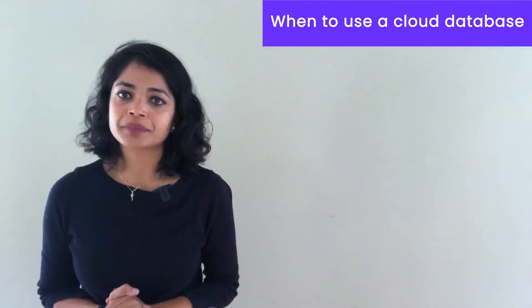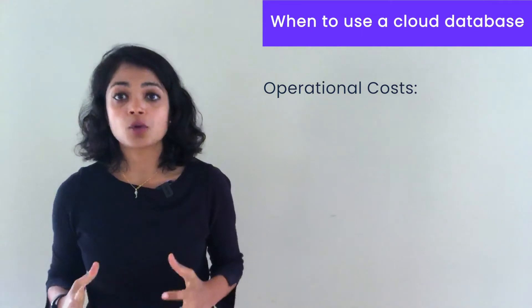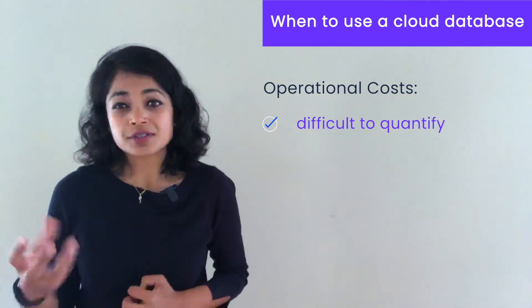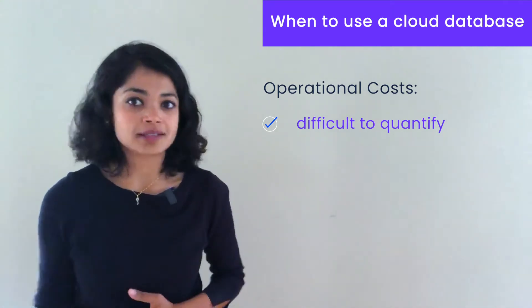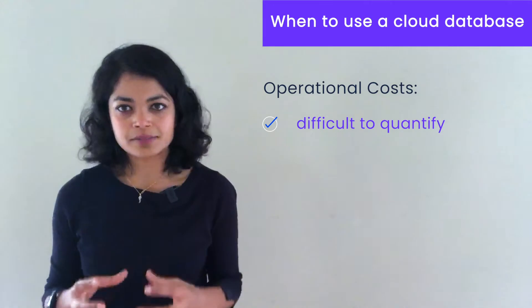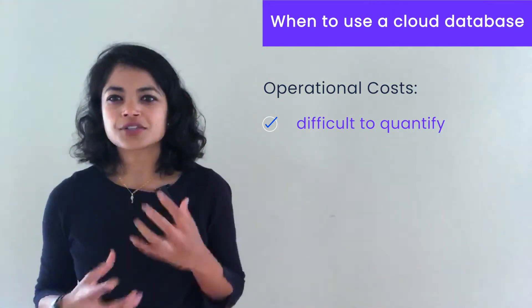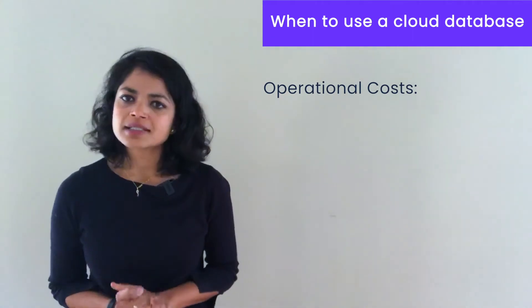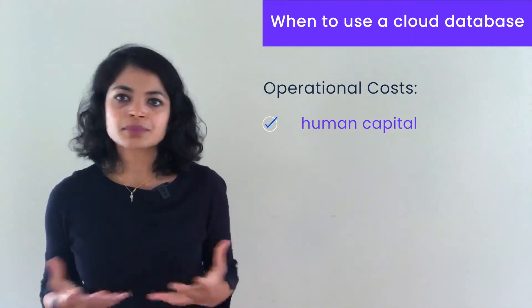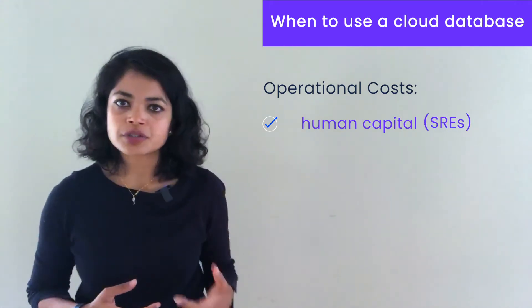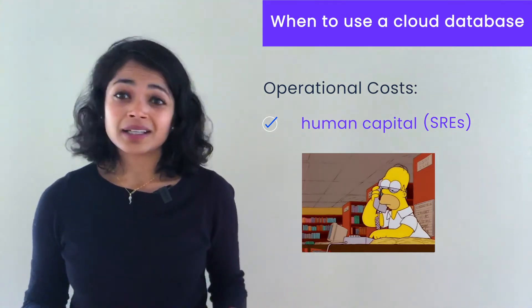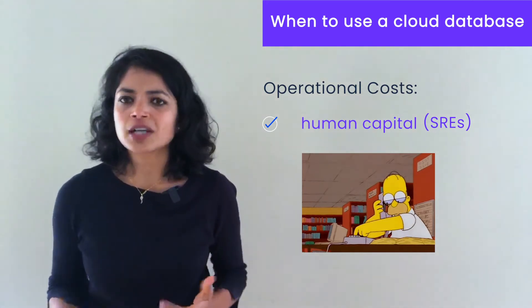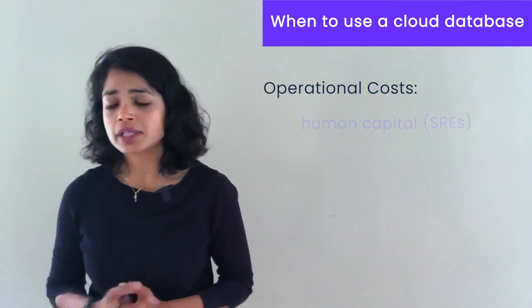The third category is what I call operational costs. Operational costs are often the hardest to quantify because, as we'll see, it's hard to put a specific number on them. When you talk about hardware or software, there's a number associated with it — you can look at your bill or your data center costs. But operational costs are more nebulous, soft costs. Let's dive deeper into what that might mean.